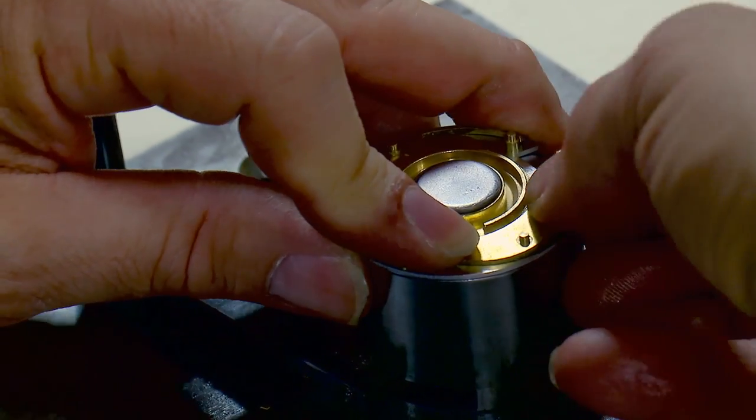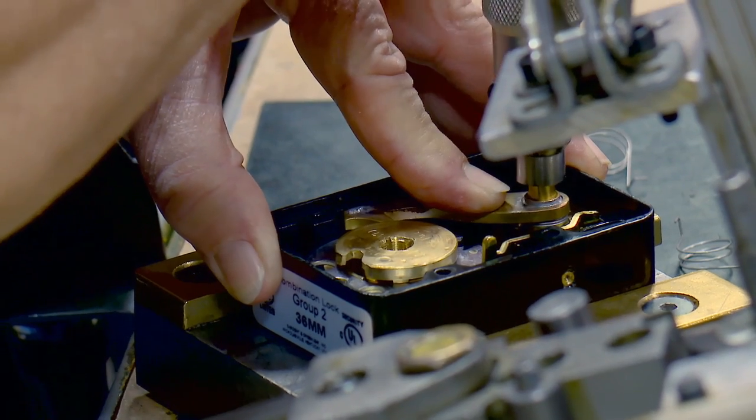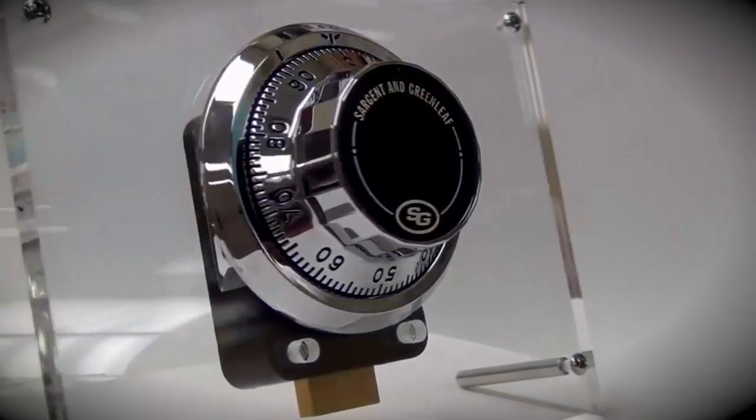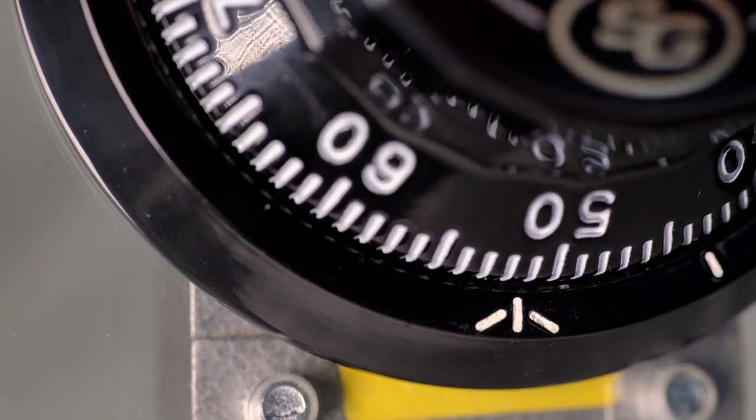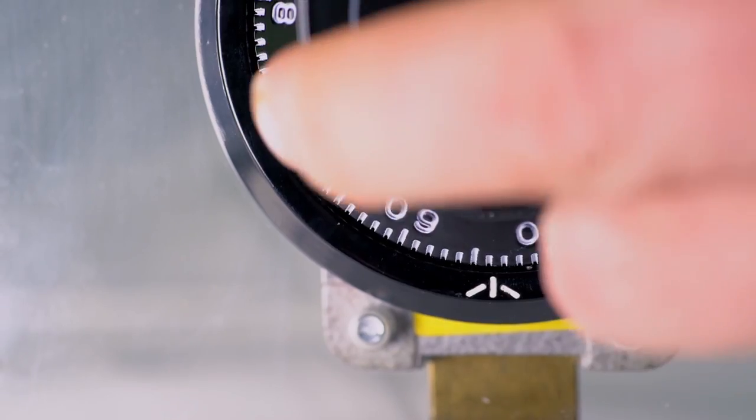In 1927, Sargent and Greenleaf rolled out the model 6730 safe combination lock. This palm-sized crime fighter has a million possible combinations.